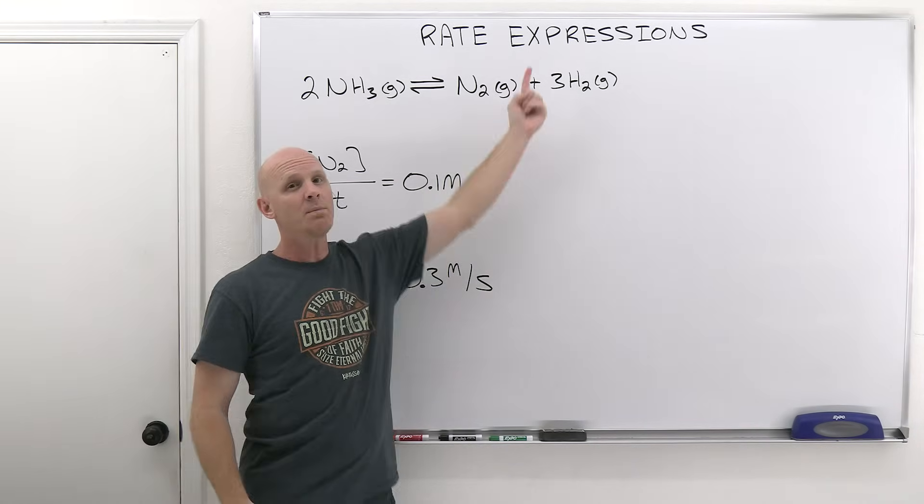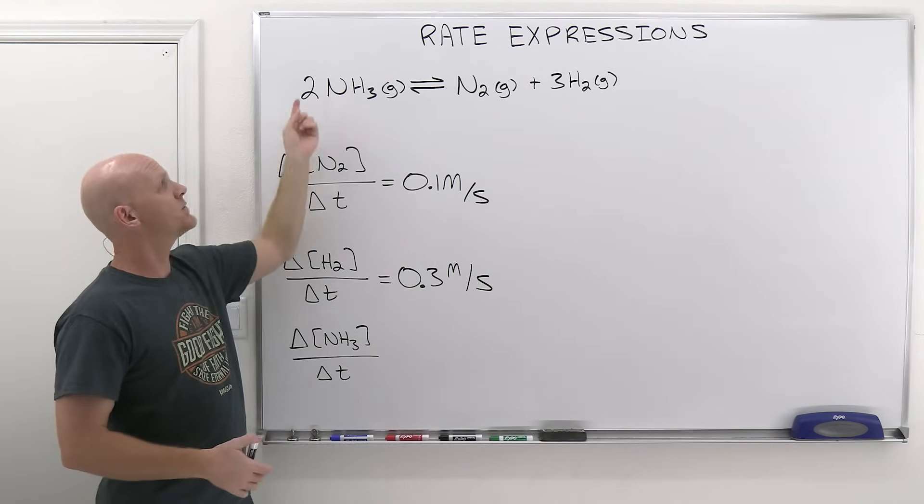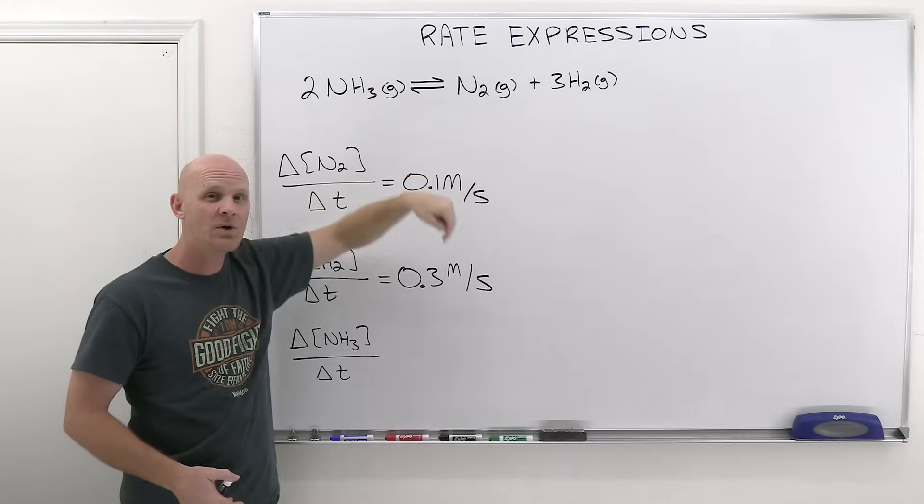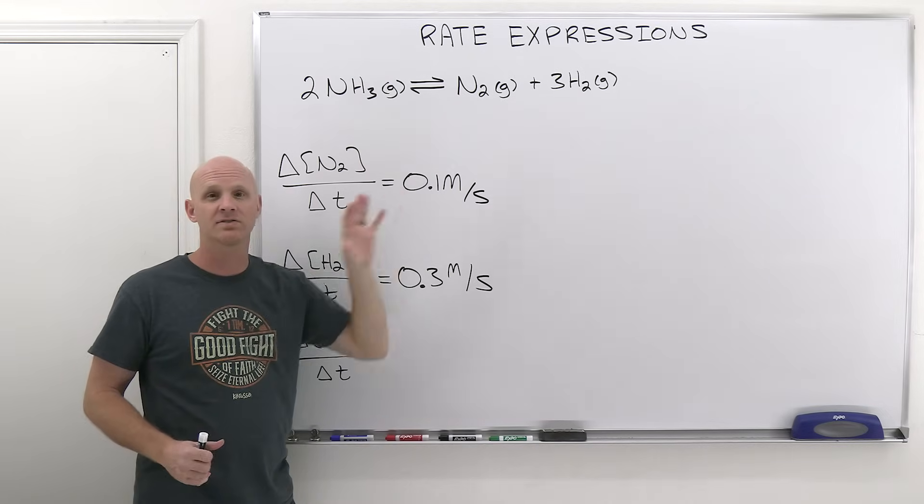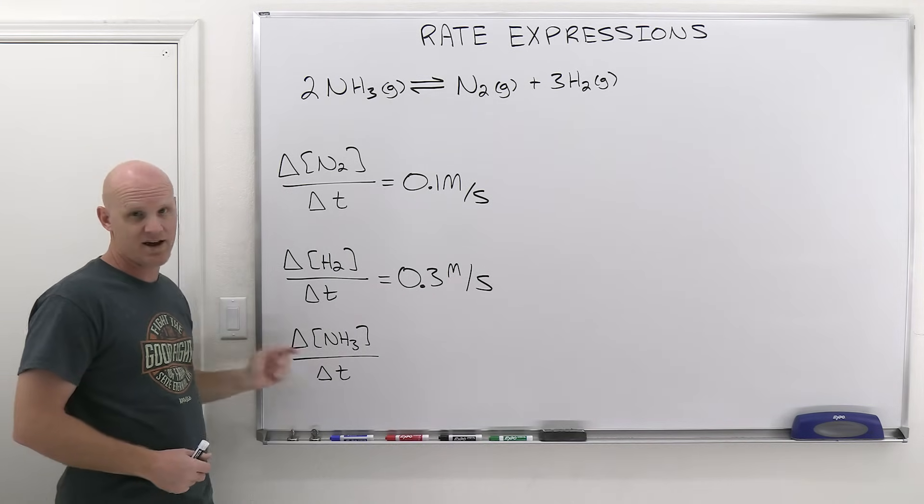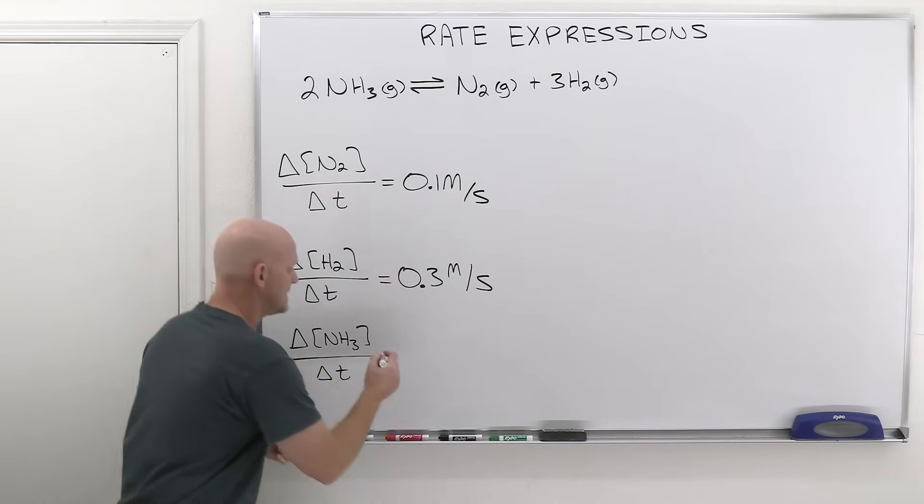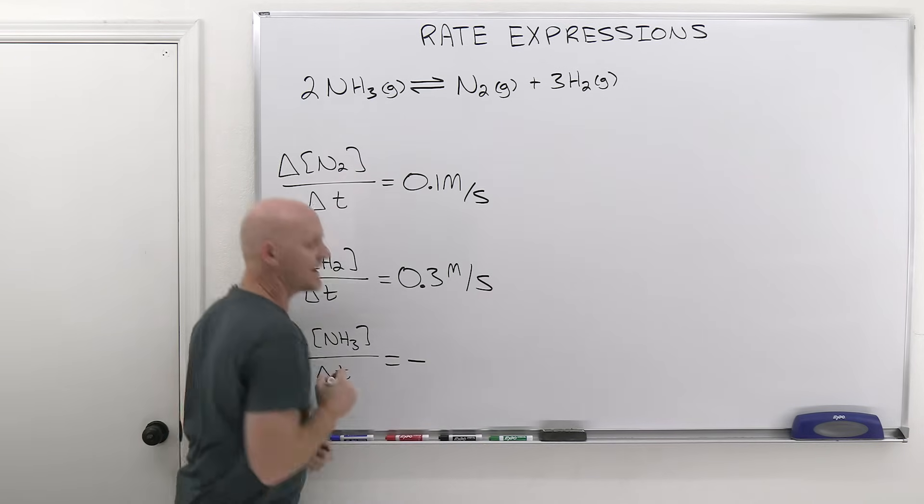What we're going to find out is that product concentrations go up, and when you have an increase, that's associated with a positive change. But reactant concentrations are going to go down as they're being consumed. If you do final minus initial, you'll find out that that decrease corresponds to a negative change. So for a reactant here, this change in concentration over change in time is actually going to come out to a negative number.